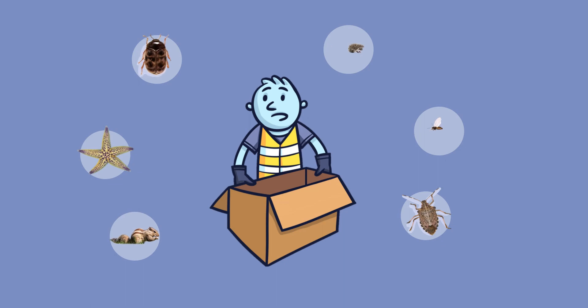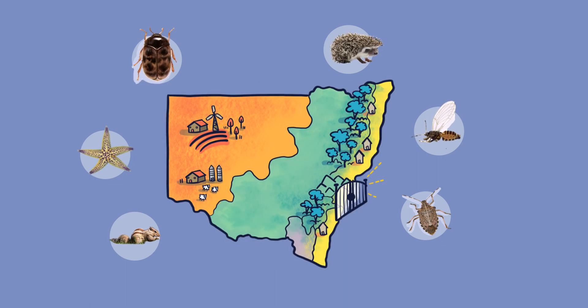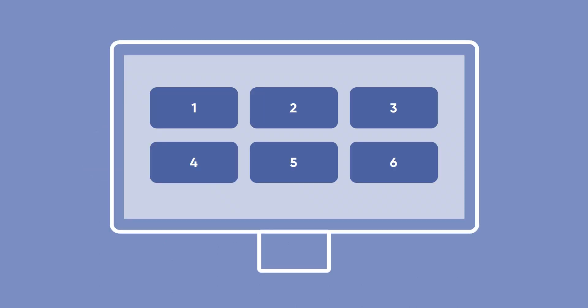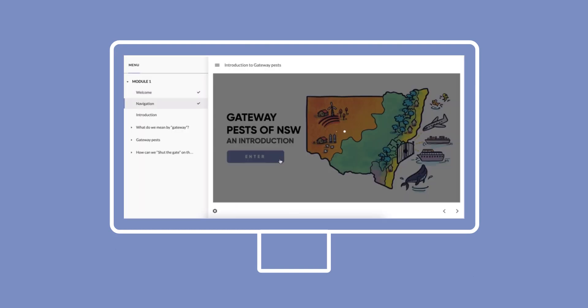These and other unwanted pests can enter our ports in New South Wales, which are the gateway to stopping these biosecurity risks before they take hold in our community. A six-part online course is now available to guide you through identifying some of these major gateway pests.